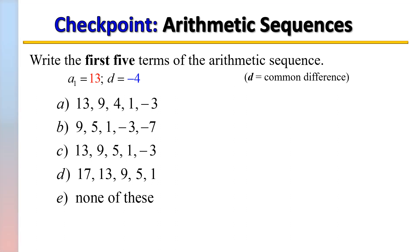Write the first five terms of the arithmetic sequence where a₁ = 13 and d = -4. Just to give you a little bit of what those variables stand for, a₁ means that's your first term. So if you're writing this sequence out, the first term would be 13, and then you would continue on with the sequence.